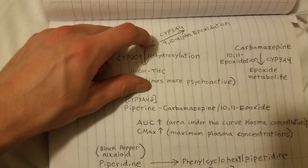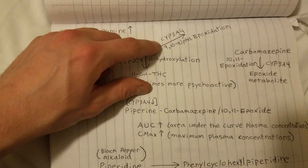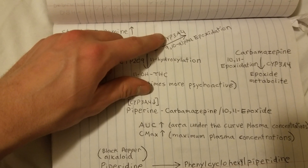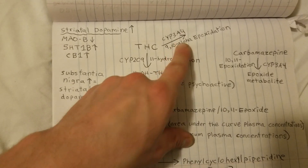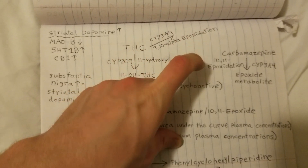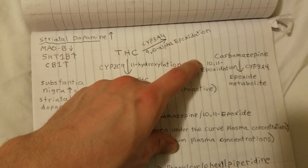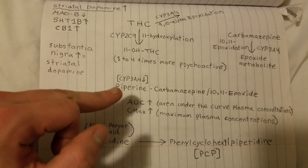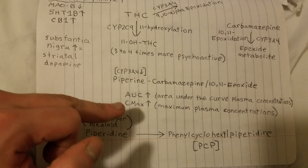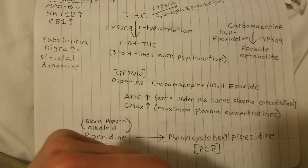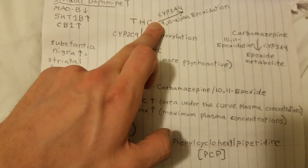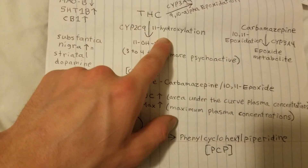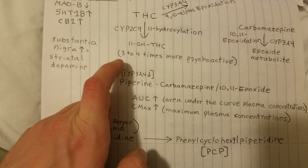This is how piperine can effectively reverse your tolerance to THC by interacting with the cytochrome P450 3A4 enzyme, which creates the metabolic reaction of 9,10-alpha epoxidation. This is similar to the epoxidation that carbamazepine undergoes through 10-11 epoxidation to make its epoxide metabolite. Piperine is known to increase area under the curve plasma concentrations and maximum plasma concentrations of carbamazepine and its epoxide metabolite, which tells you it works on this mechanism of metabolism.